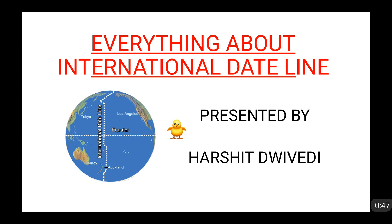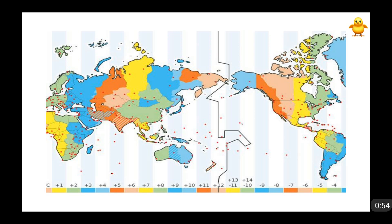Here you can see the figure of the international dateline. This international dateline is passing through all of the ocean. It goes from the Bering Strait — this is basically the Bering Strait from which this international dateline passes.